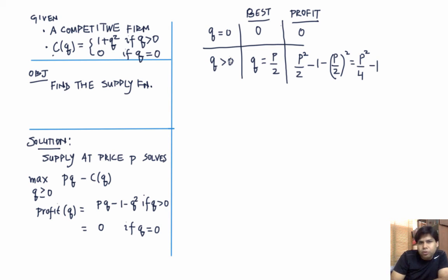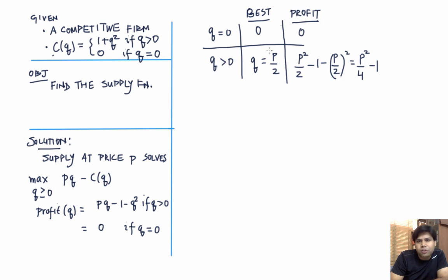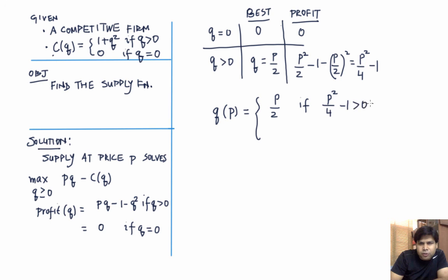If we choose the best strictly positive quantity, the profit is P²/4 minus 1. If we choose Q = 0, the profit is 0. We choose Q = P/2 when P²/4 minus 1 is strictly positive, which is equivalent to P greater than 2. Otherwise we choose Q = 0. So the supply function is: Q*(P) = P/2 if P > 2, and 0 if P ≤ 2.